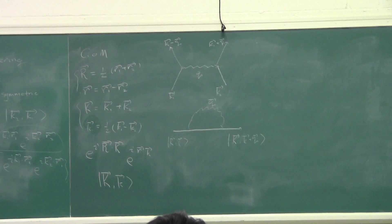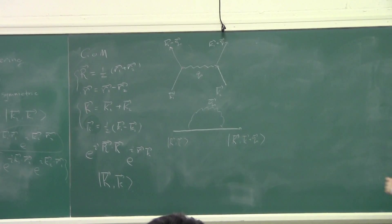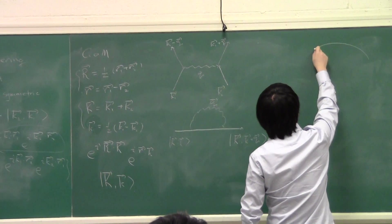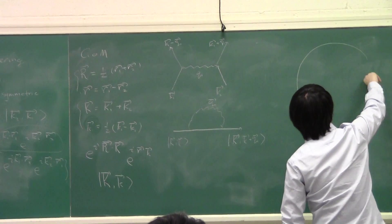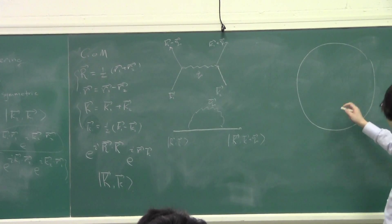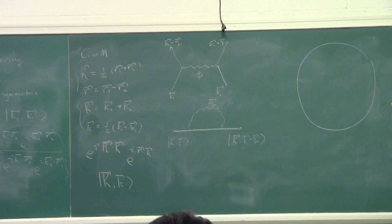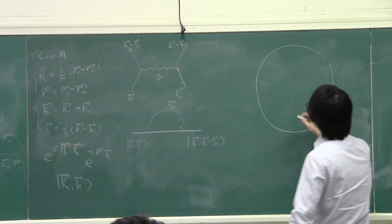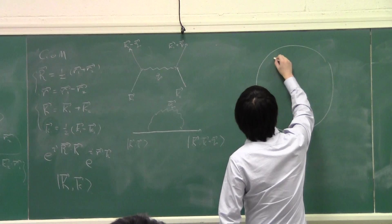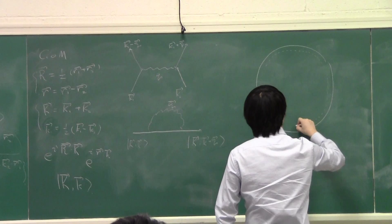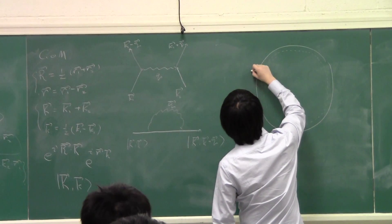Now let's look at this on the Fermi sphere. We roughly have a sphere, and the edge of the sphere is uncertain — it's going to be a shell of plus or minus the energy of the most energetic phonon. So it roughly has about three layers.